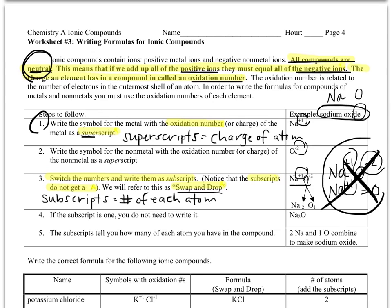Do this: take the superscript that's on the sodium and bring it down to the other side of the formula, meaning bring it over to the oxygen and write it down low. And take the two that's on the oxygen, bring it to the other side of the formula, so bring it over to the sodium and write it down low. We call it swap because the number that was on the sodium is now going to be on the oxygen. The number that was on the oxygen is now going to be on the sodium, so they're swapping numbers. And we call it drop because instead of being superscripts, they're now going to be subscripts.